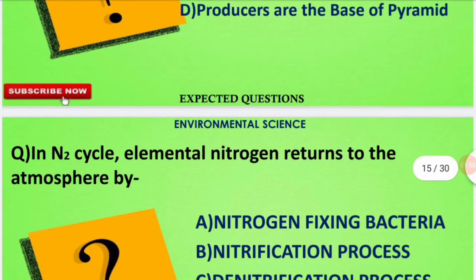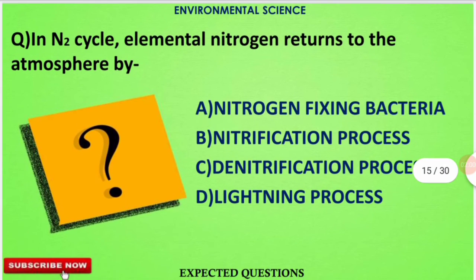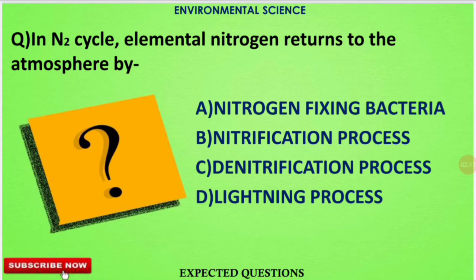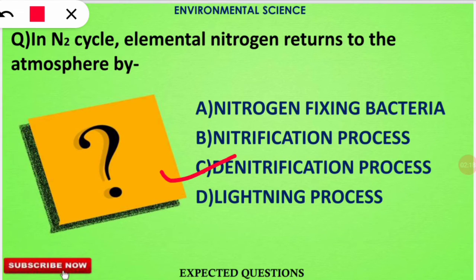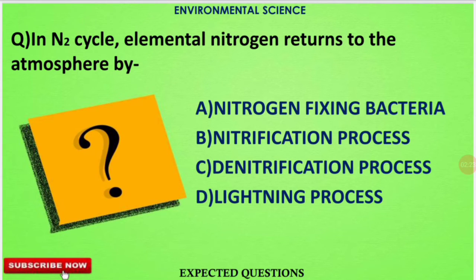The next question is about the nitrogen cycle: the elemental nitrogen returns to the atmosphere by which of the following processes? The correct option will be option number C — denitrification. The denitrification process returns elemental nitrogen back into the atmosphere.